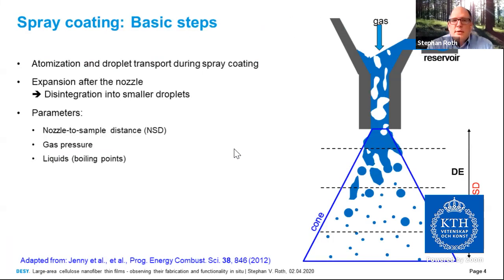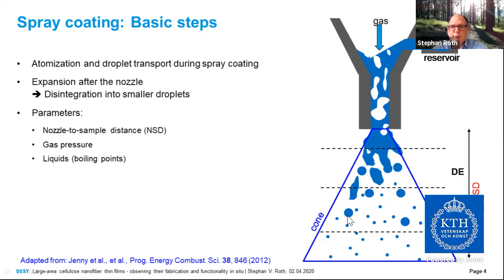The principle of spray coating involves atomization and droplet transport. You have a nozzle, a liquid reservoir, and a gas inlet. The gas inlet, at a certain pressure, drags out the liquid and installs a two-phase flow; at the end of the nozzle this two-phase flow breaks up first into filaments and then into smaller droplets. In the spray cone you can distinguish three regimes: the dense regime, the dilute regime, and the very dilute regime. We often work in the dilute or very dilute regime, where we have single droplets impinging on the surface.